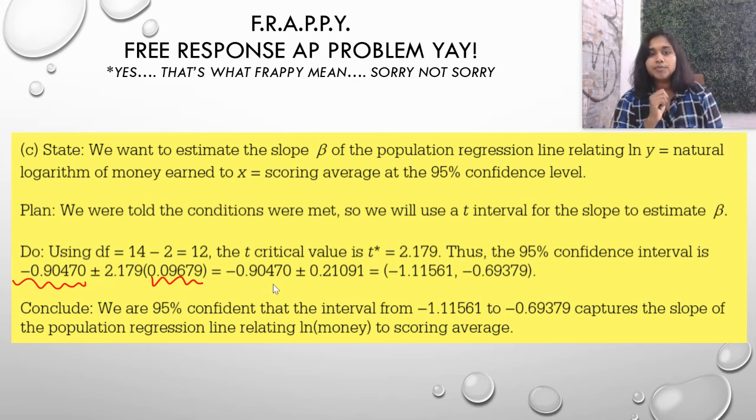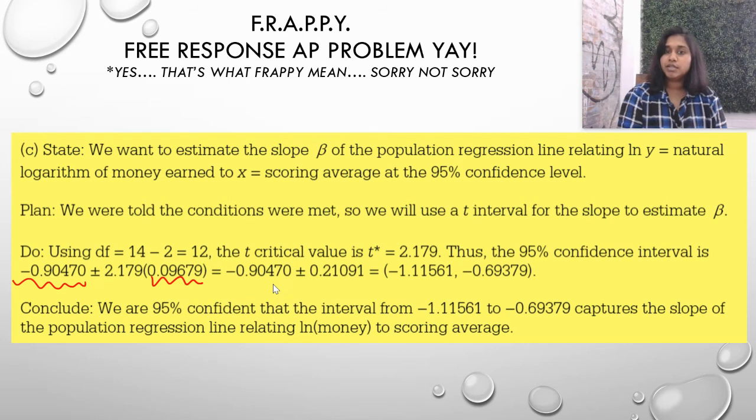We are 95% confident that the interval from blah to blah captures the slope of the population regression line relating the natural log of money to score average, not relating money to scoring average. We couldn't do that, could we? We proved that in question A.